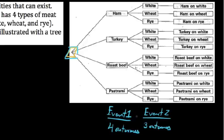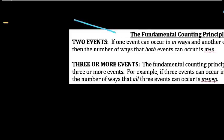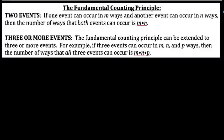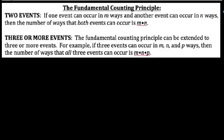What this does is present what we call the fundamental counting principle. Basically, we could draw a tree diagram for everything, or we could say this: for two events — like event one, choose a meat, and event two, choose a bread — if one event can occur in m different ways, and another event can occur in n ways, then the number of ways that both events can occur is m times n.